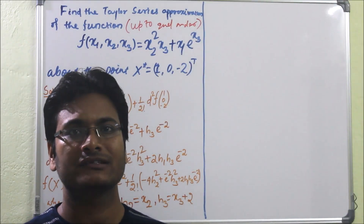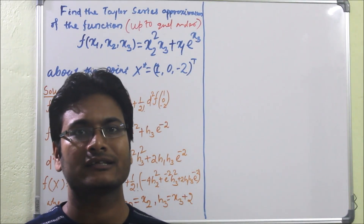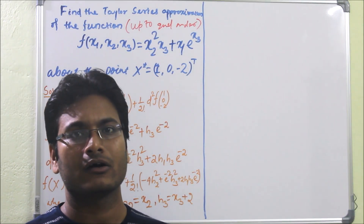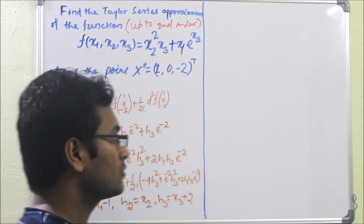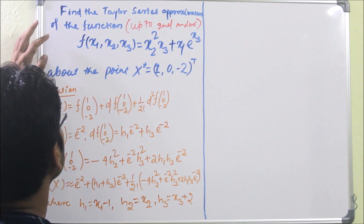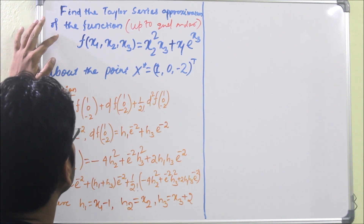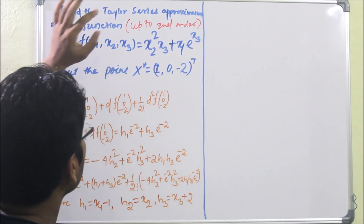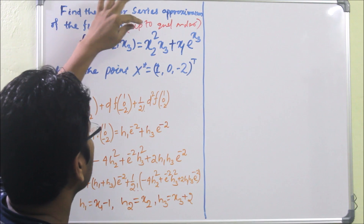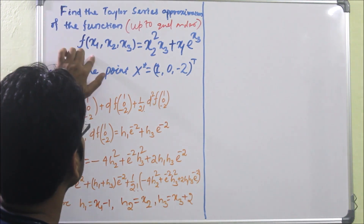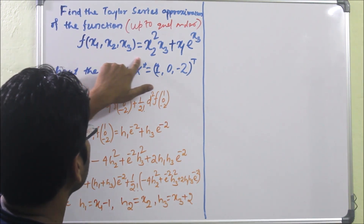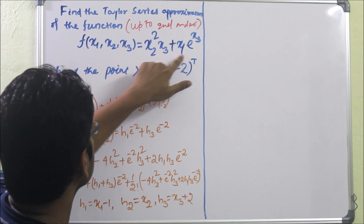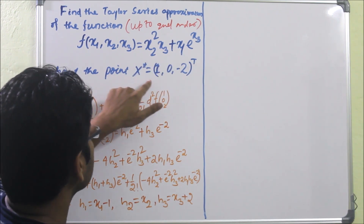Welcome friends. Today we will see an example problem of multivariable function and its Taylor series approximation. Here is the problem: find the Taylor series approximation of the function up to second order. That is important — up to second order. The function has three independent variables, and we expand it above the point x star.